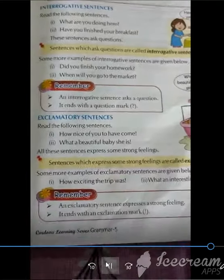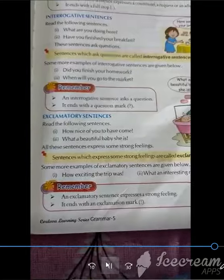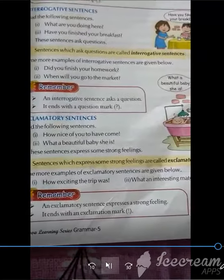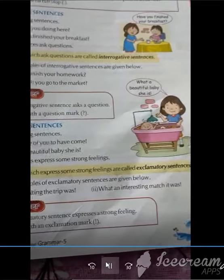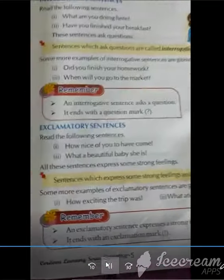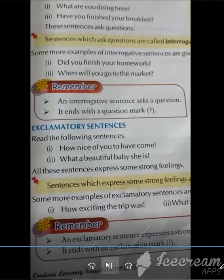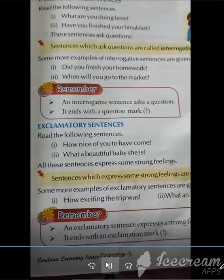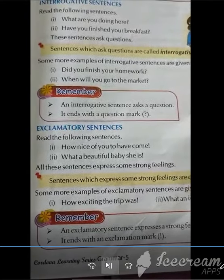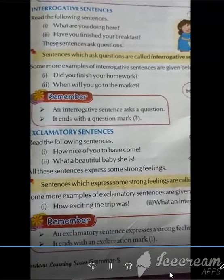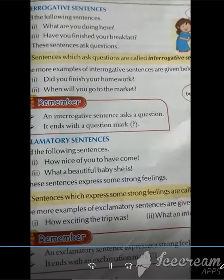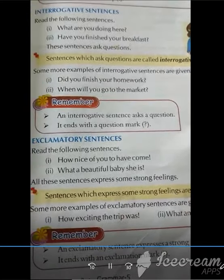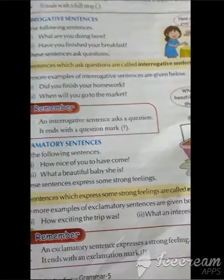Now, exclamatory sentences. Sentences which express some strong feelings are called exclamatory sentences. Example: How nice of you to have come. What a beautiful baby she is. To express something, like: Hurray, we won the match! Hurray is a feeling.